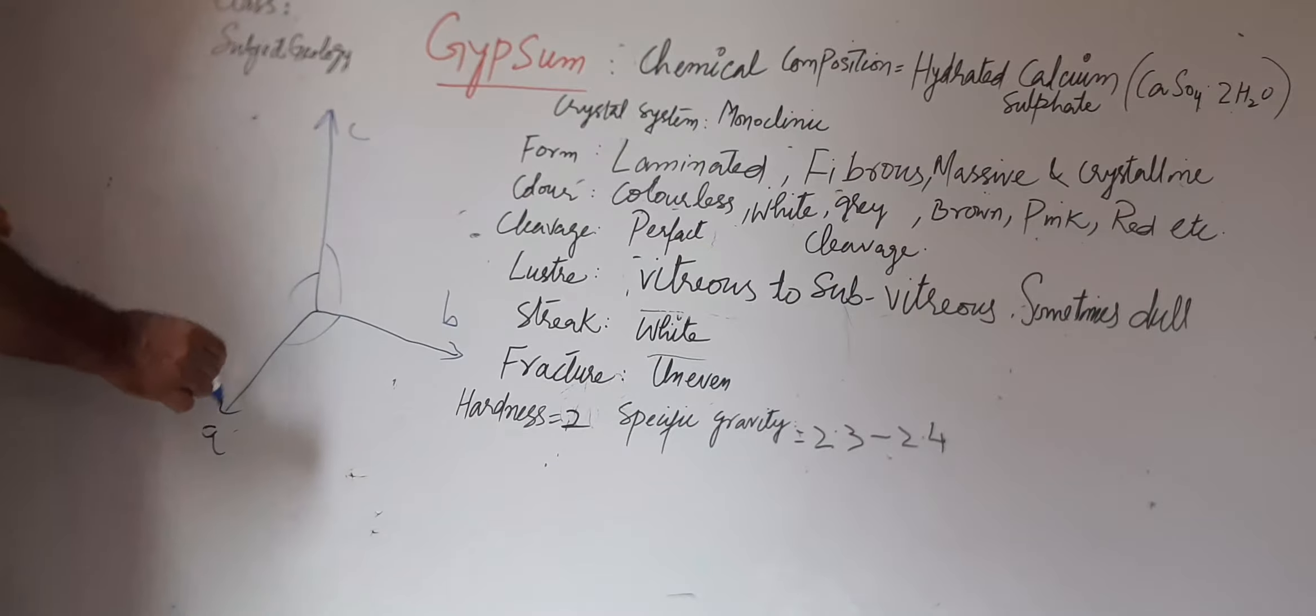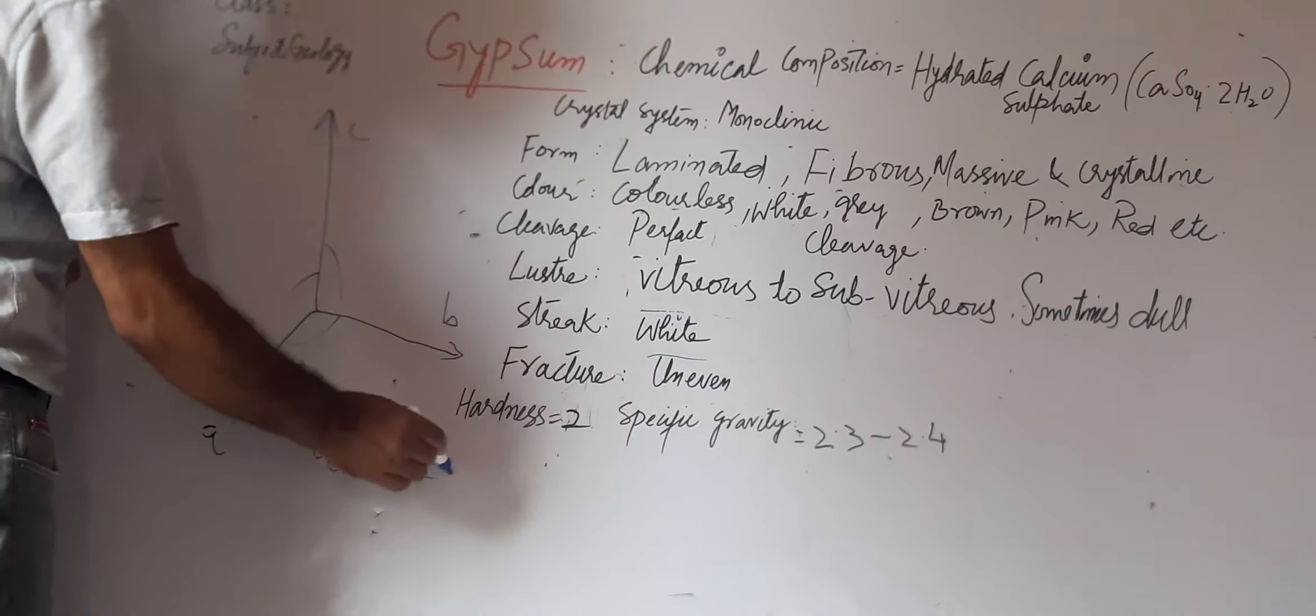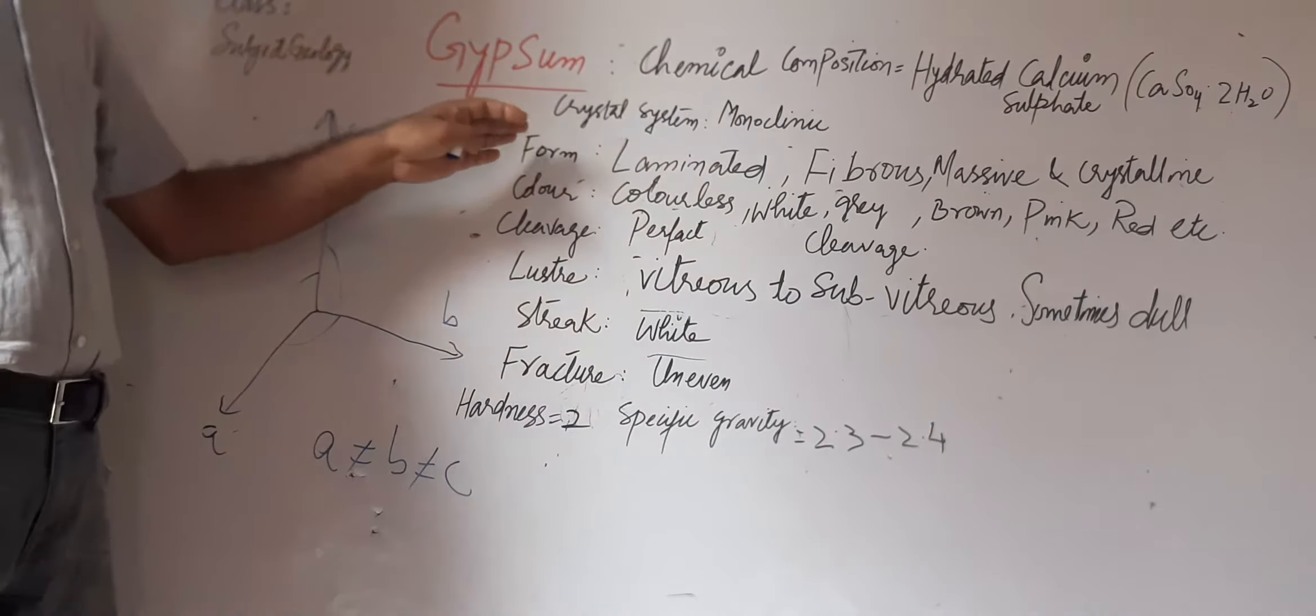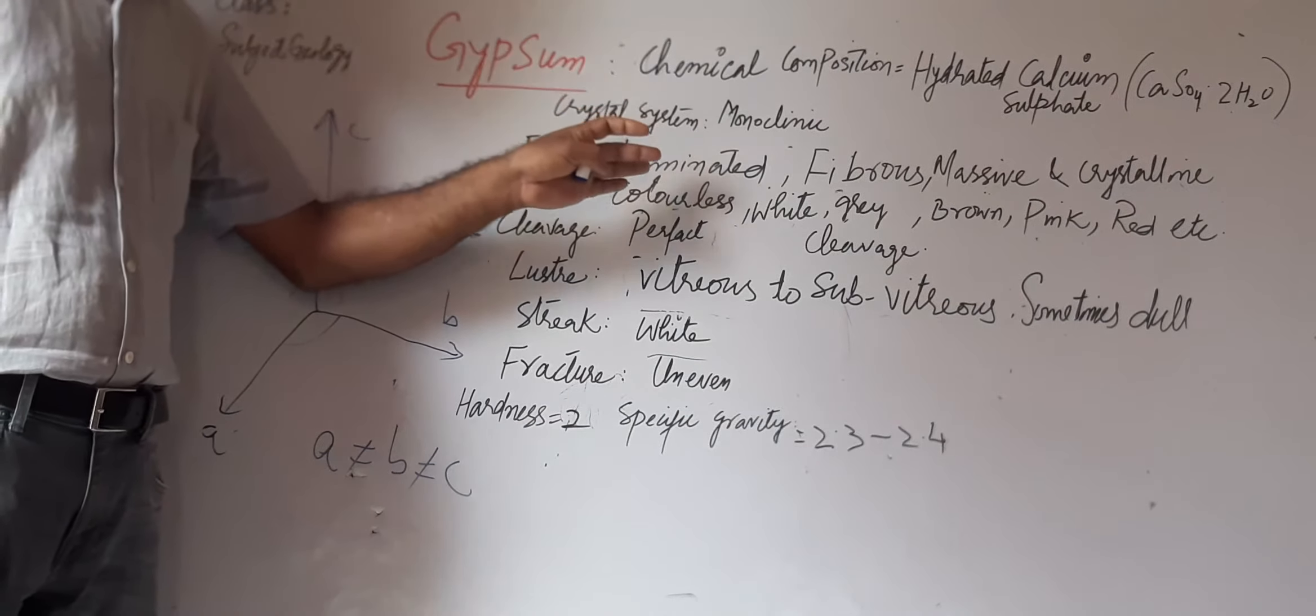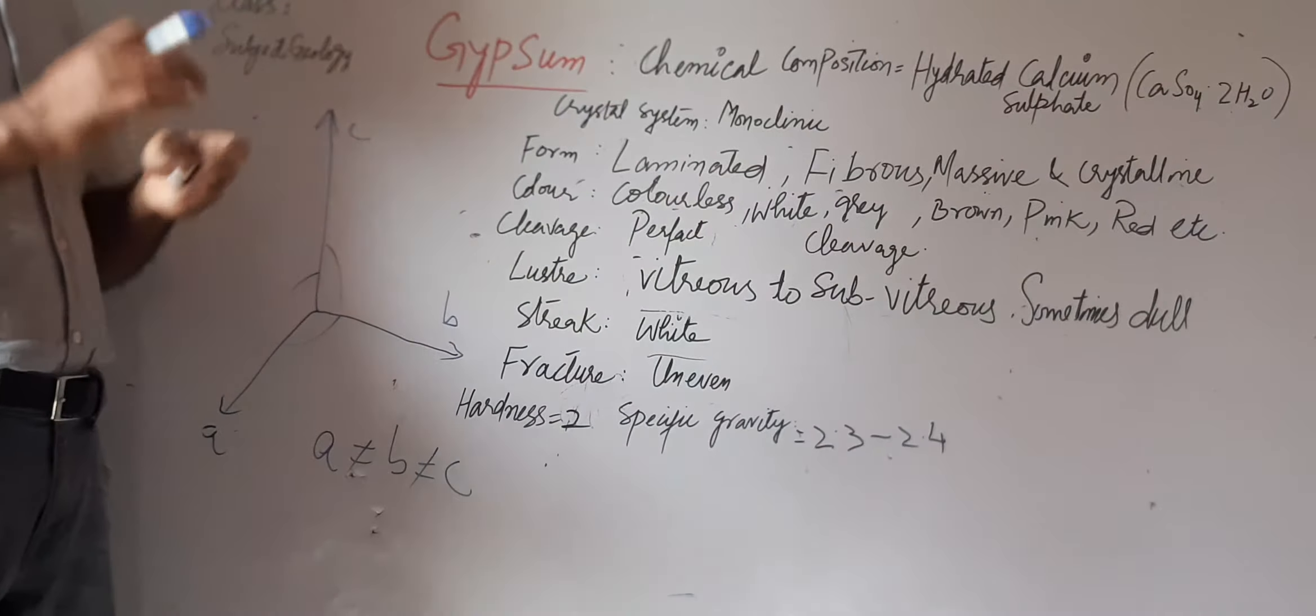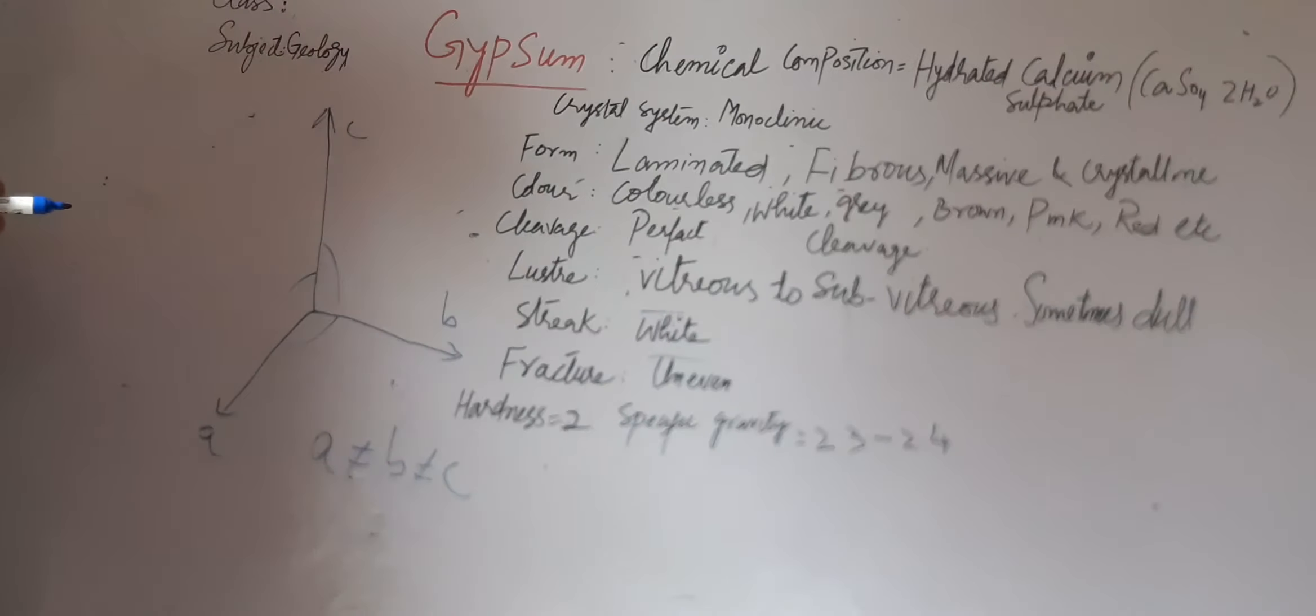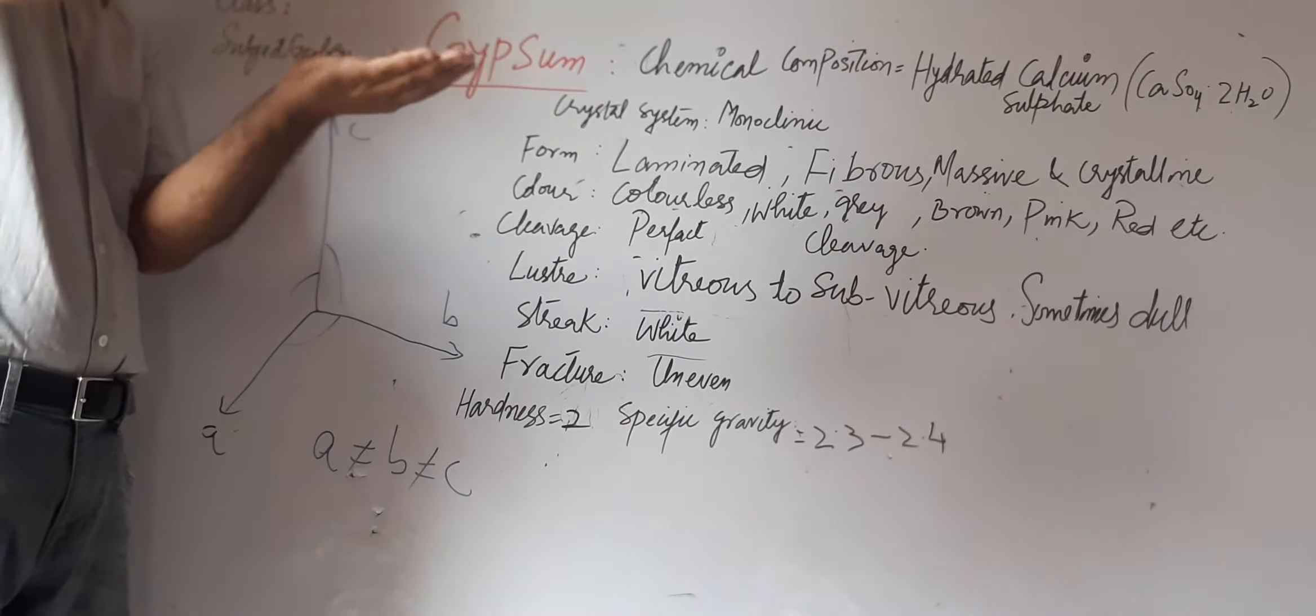...to others, this monoclinic system has three unequal vectors a, b, and c. The form of this gypsum has a laminated form, fibrous type, massive, and sometimes crystallized. That means when we see the laminated type of sheets...